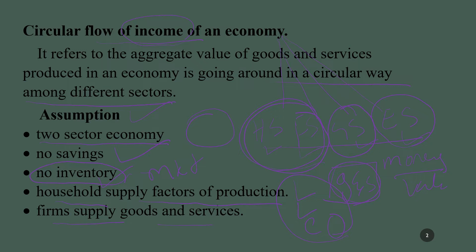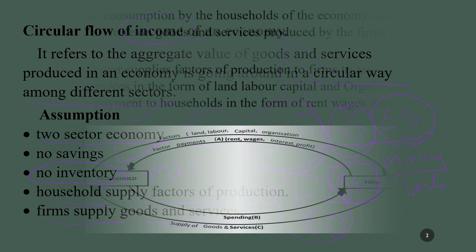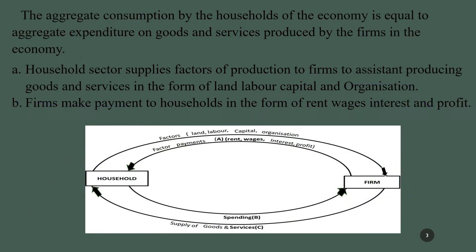The firm sector supplies goods and services. Aggregate consumption of the household sector of the economy is equal to aggregate expenditure on goods and services produced by the firms. The household sector's income received is entirely spent.